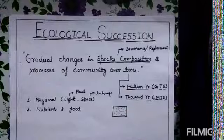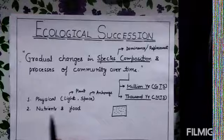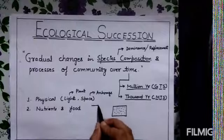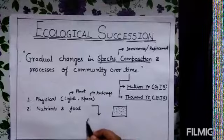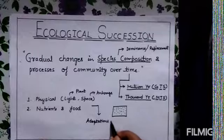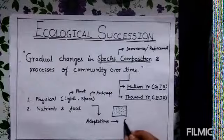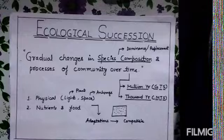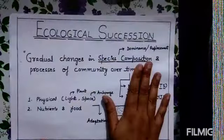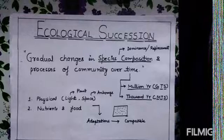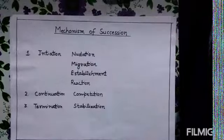Plants also need space to have proper sunlight and access to nutrients and food. This whole process of adaptation — to make any community much more compatible for any kind of habitat — leads towards certain adaptations required by the organism to make them more adaptable for a certain habitat. These adaptations lead to more compatible organisms that better survive in any particular habitat area. Together, the changes in species composition and community processes are known as ecological succession.